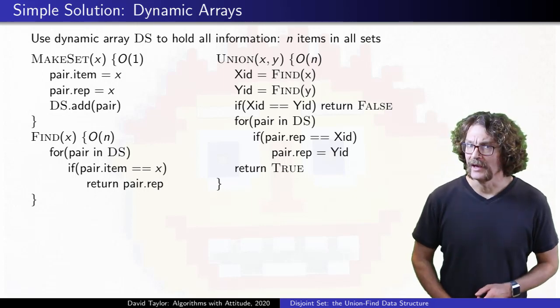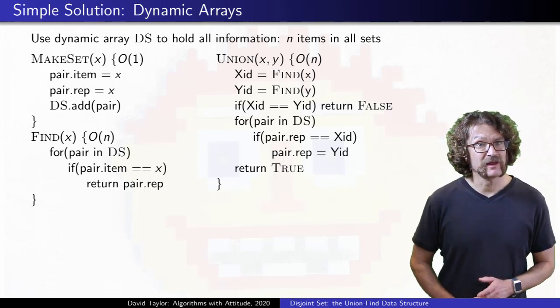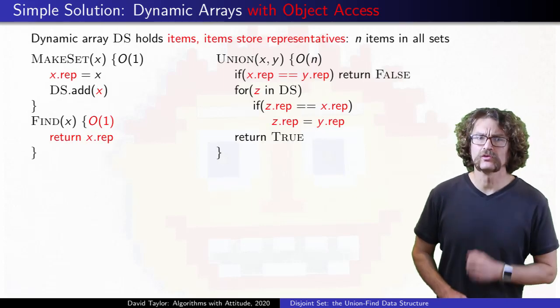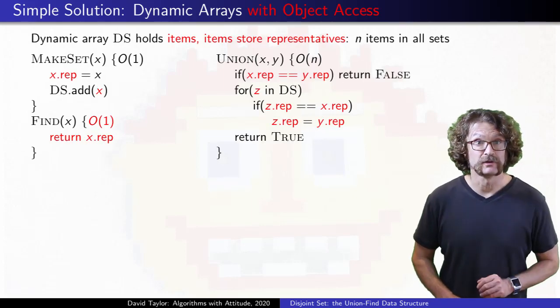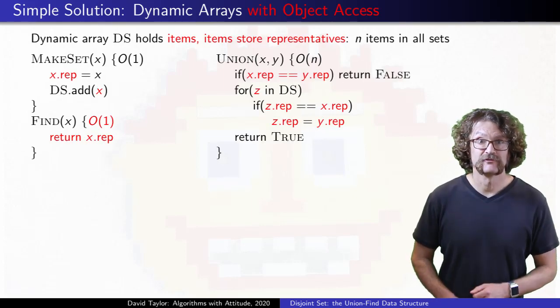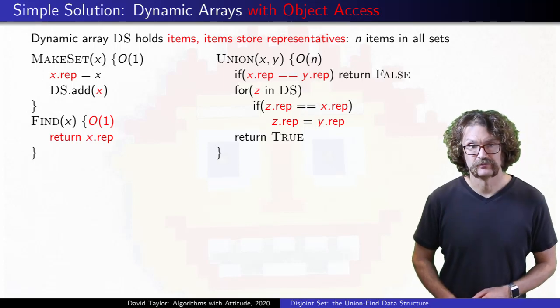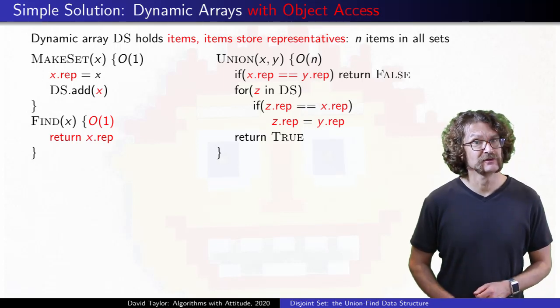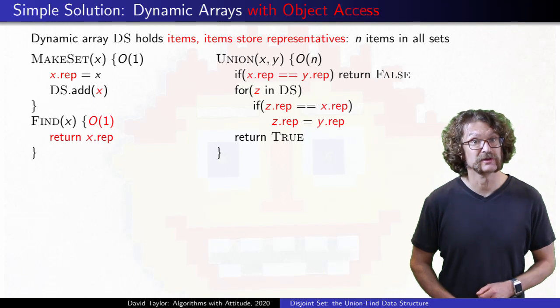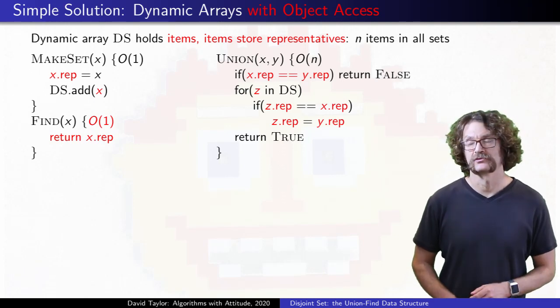Once we have that, we can store a reference to the set representative right in the object itself. The code gets really simple, find is trivial. We just return the representative from the object in constant time. Union still takes linear time in the entire set of objects, but the code and the other run times are great.